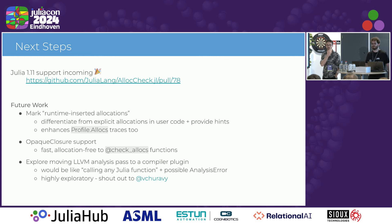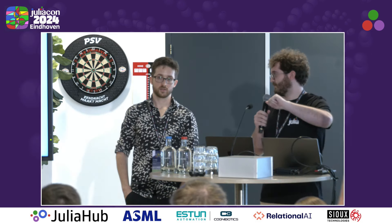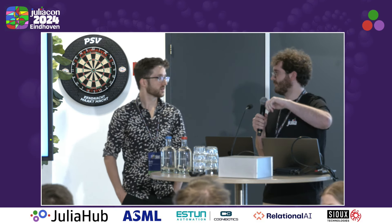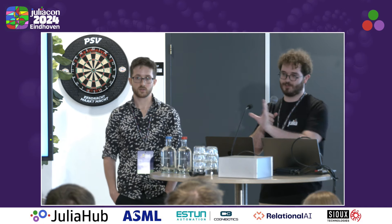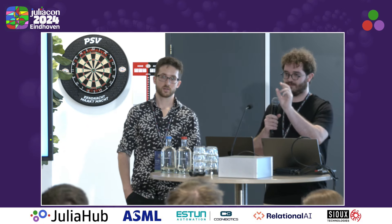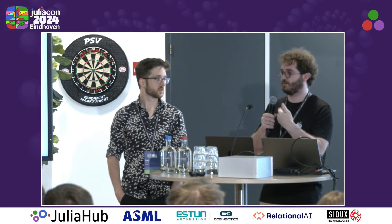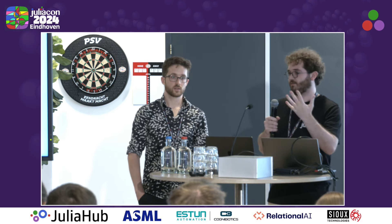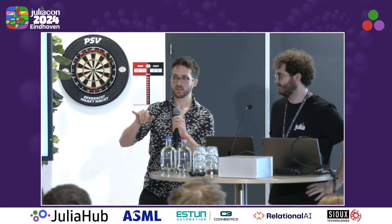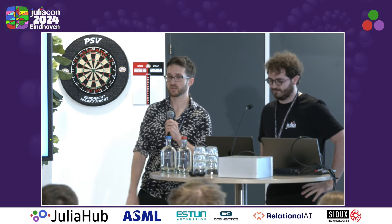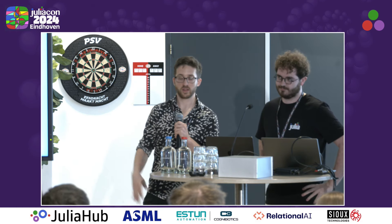Q: How do I actually use AllocCheck to check if my function allocates? A: There are two functionalities, both called check_allocs. One is a macro you put in front of your function declaration — it uses generated functions to ensure that function doesn't allocate at runtime. There is also a version like @code_typed where you put the function with its argument types, and a non-macro version where you pass the function in a tuple with the argument types. Both do basically the same thing — one checks when you call the function, the other is like a compile-time check. The usage is exactly the same as @code_typed or @code_warntype.